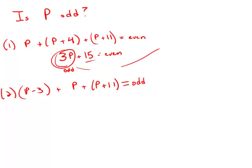Well, if 3p is odd, the only way that's going to happen, if p were an even number, 3 times p would be even. So the only way that would happen is if p is odd. So it turns out statement number one is sufficient to answer the question, yes, p is odd.